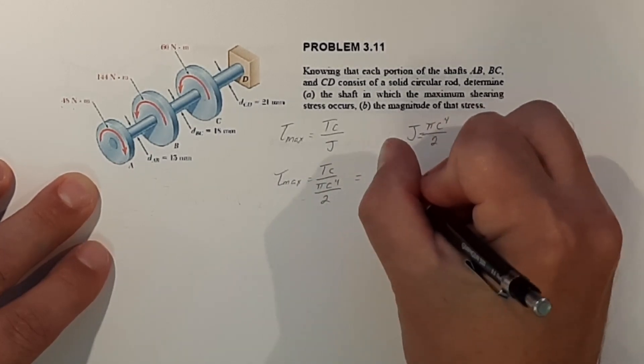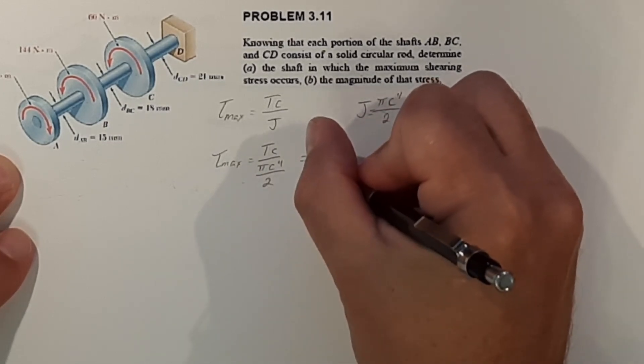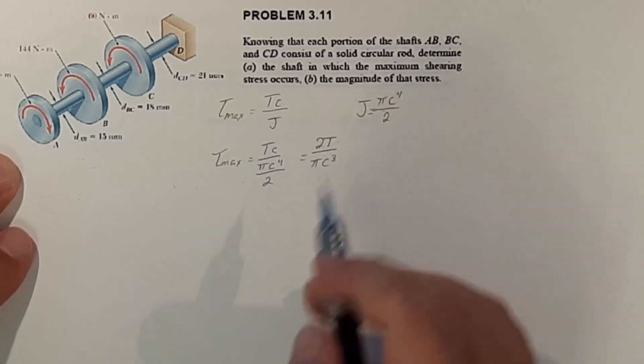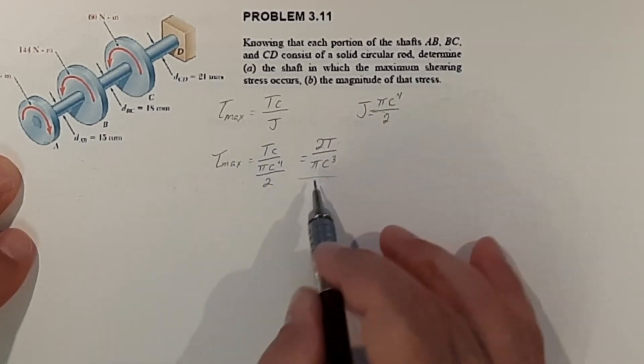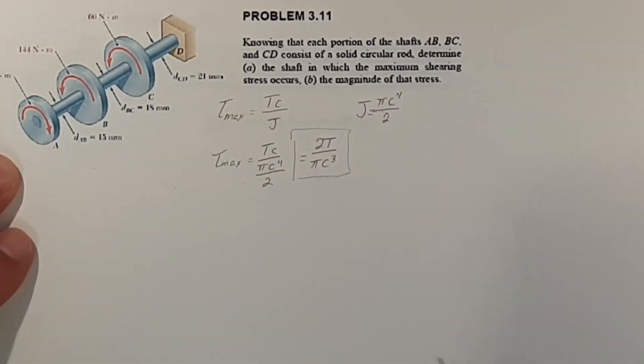So we'll get 2T divided by pi C to the third. This equation is what we'll be using to solve for the maximum shearing stress in each section.